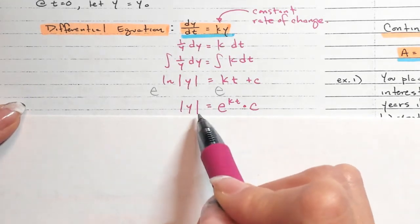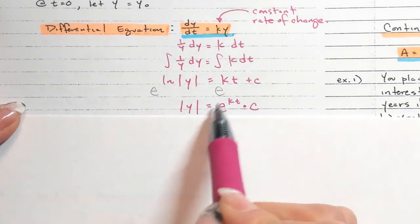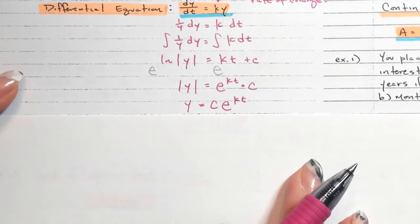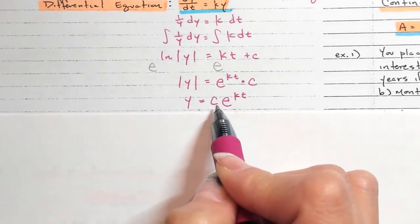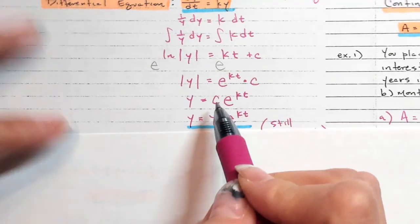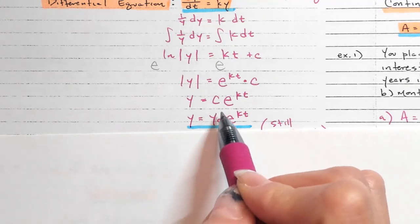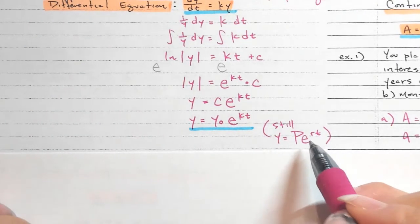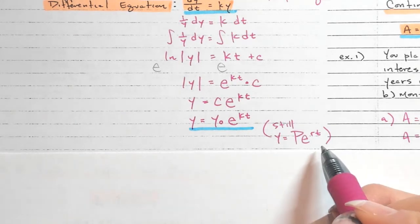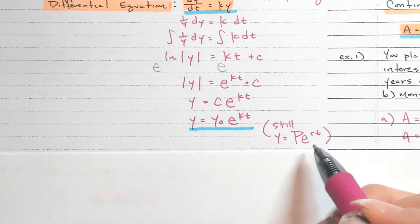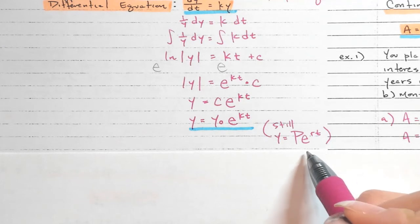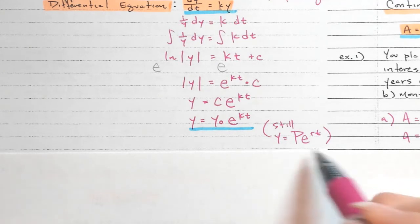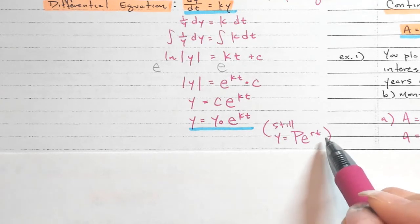When we remove the absolute value, we get y equals plus or minus, but multiplying C in front handles that since C can be any number — positive or negative. C represents the initial value, and this formula should look familiar from Algebra 2, where we studied compound interest. We learned about compounding monthly, yearly, daily, and continuously. The formula for continuous compounding is y = Pe^(rt), which I remember as PERT.